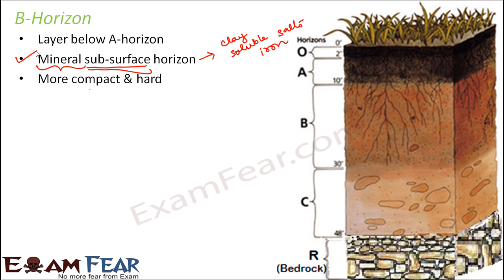Talking about the texture of this layer, it is more compact and hard. Unlike the A horizon, which was soft and had pores, B horizon is quite tough and hard. As far as mineral content is concerned, it has decent mineral content. It is typically formed by the transformation of materials present in the A horizon — those materials get transformed and gradually move down, and that is how the B horizon is formed.